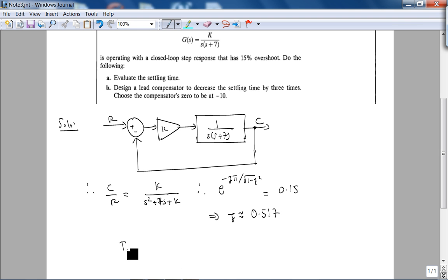Now we want settling time, so part a, Ts is 4 over zeta omega n.